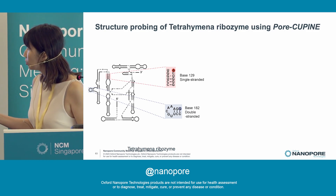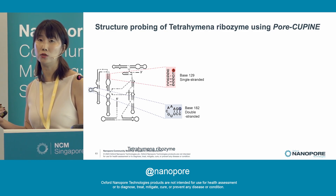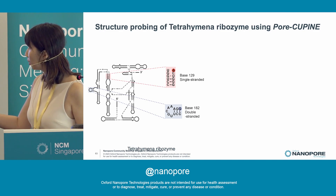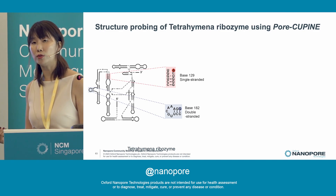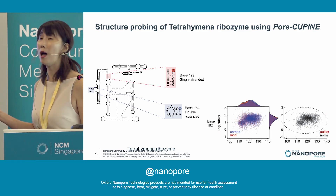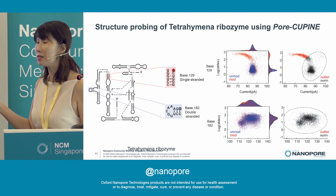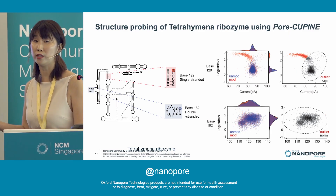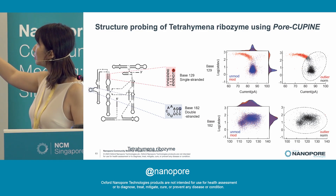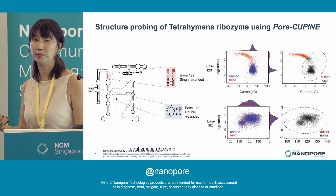Here is an example using the Tetrahymena ribozyme, an RNA studied for decades because of its well-known structure that enables it to cleave itself and undergo self-catalysis. When a base is in a double-stranded context, chemicals that modify single-stranded regions will not modify it — and so the current clouds for modified or unmodified signals look very similar and overlap. But when a base is in a single-stranded region, it can be modified by the single-stranded chemical, in this case an AI-SHAPE reagent, and the modified clouds look very different from the unmodified clouds. We can identify and quantitate this difference.